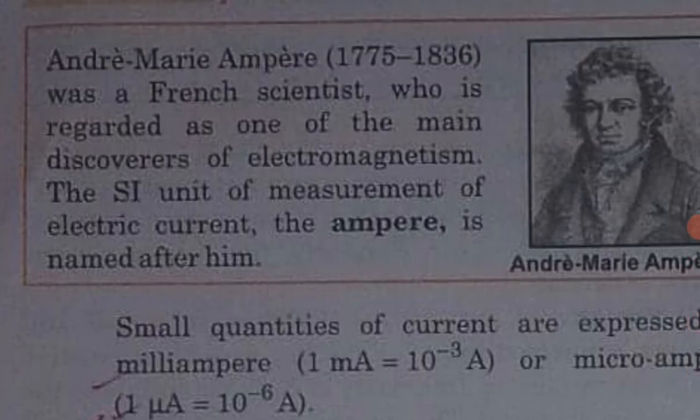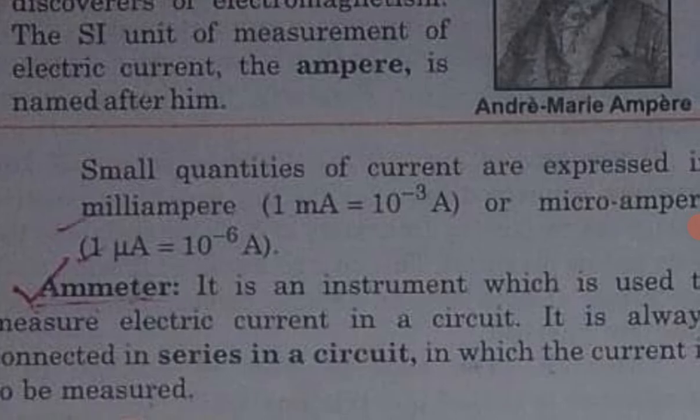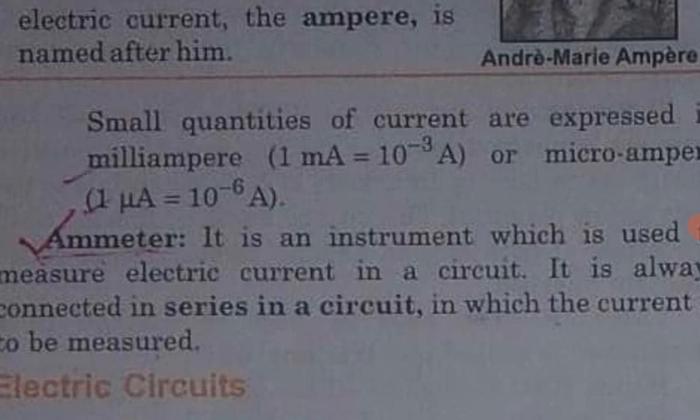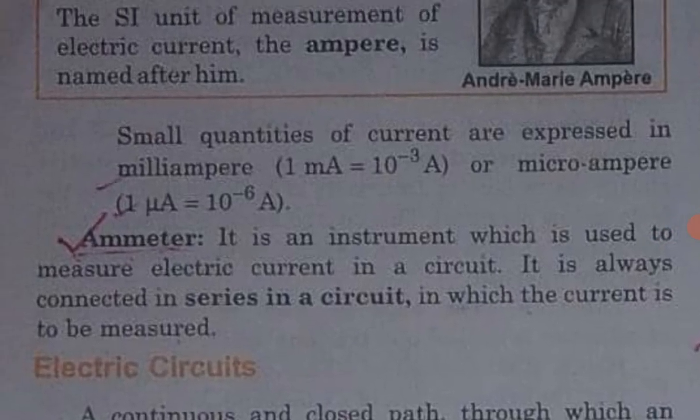An ammeter is an instrument used to measure the electric current in a circuit. It is always connected in series in the circuit in which the current is to be measured.